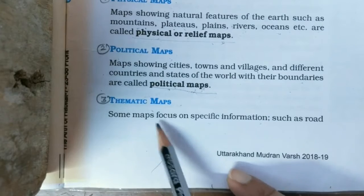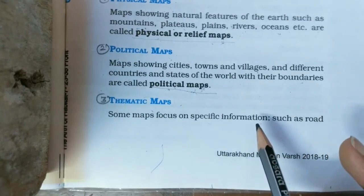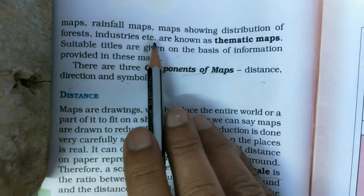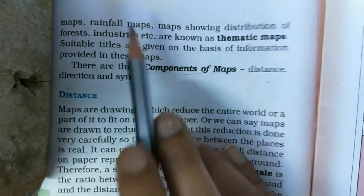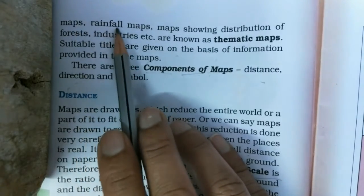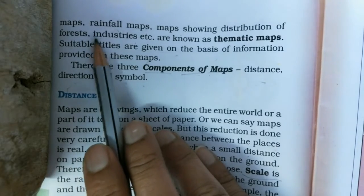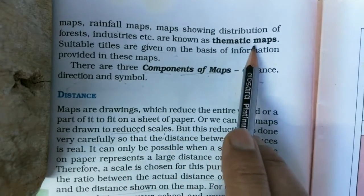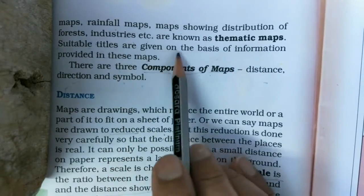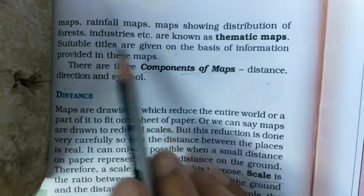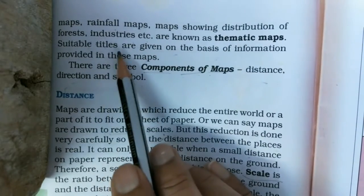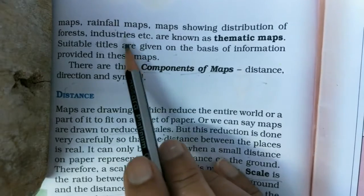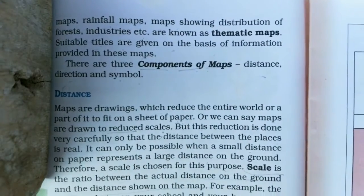The third type is Thematic maps. Some maps focus on specific information, such as road maps, rainfall maps, maps showing distribution of forests, industries, etc. कुछ maps ऐसे होते हैं जिनमें कुछ खास information दी जाती है — जैसे road maps, rainfall maps, maps showing distribution of forests, industries। इन maps को उनकी information के according suitable titles दिए जाते हैं। इस type के maps को thematic maps के नाम से जाना जाता है।